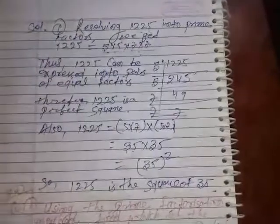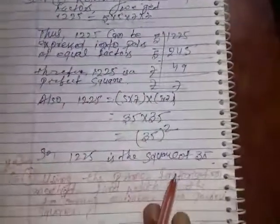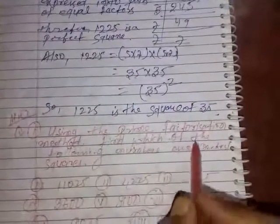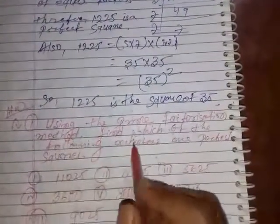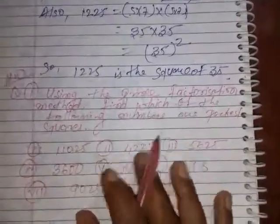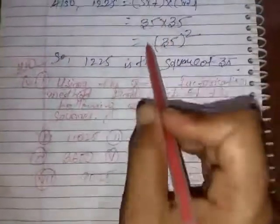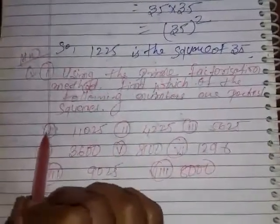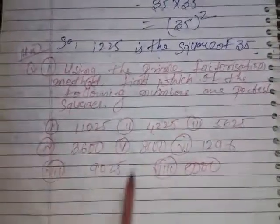Same as, using the prime factorization method, find which of the following numbers are perfect squares. Same as you have to solve these 8 questions.